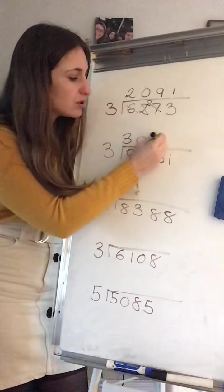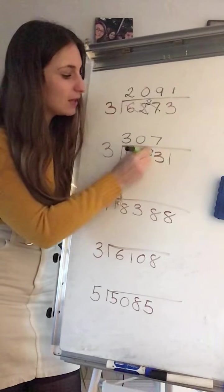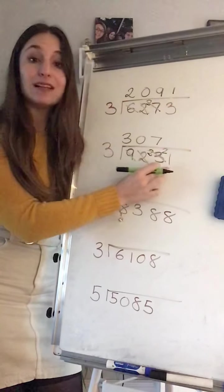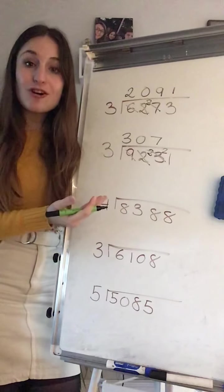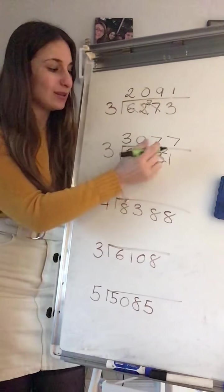23. Is 23 on my 3 timetable? Well, it's not. The closer one is 7 times 3 is 21, 22, 23. So I carry 2 and I make it 21. 21 is on my 3 timetable, 7 times 3 is 21.